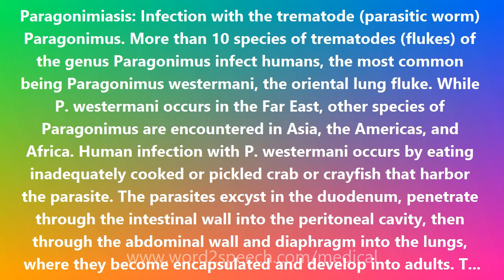Infections may persist for 20 years in humans. The acute phase of invasion and migration may be marked by diarrhea, abdominal pain, fever, cough, urticaria (hives), hepatosplenomegaly (enlargement of the liver and spleen), pulmonary abnormalities, and eosinophilia — an elevated level of eosinophils, a type of white blood cell.